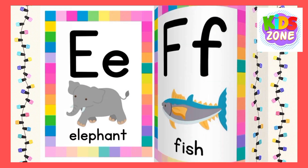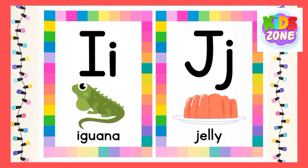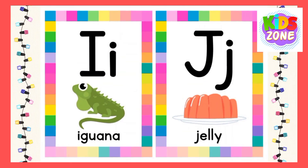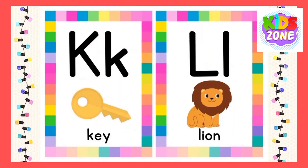G for crab, H for hen, I for iguana, J for jelly, K for K.